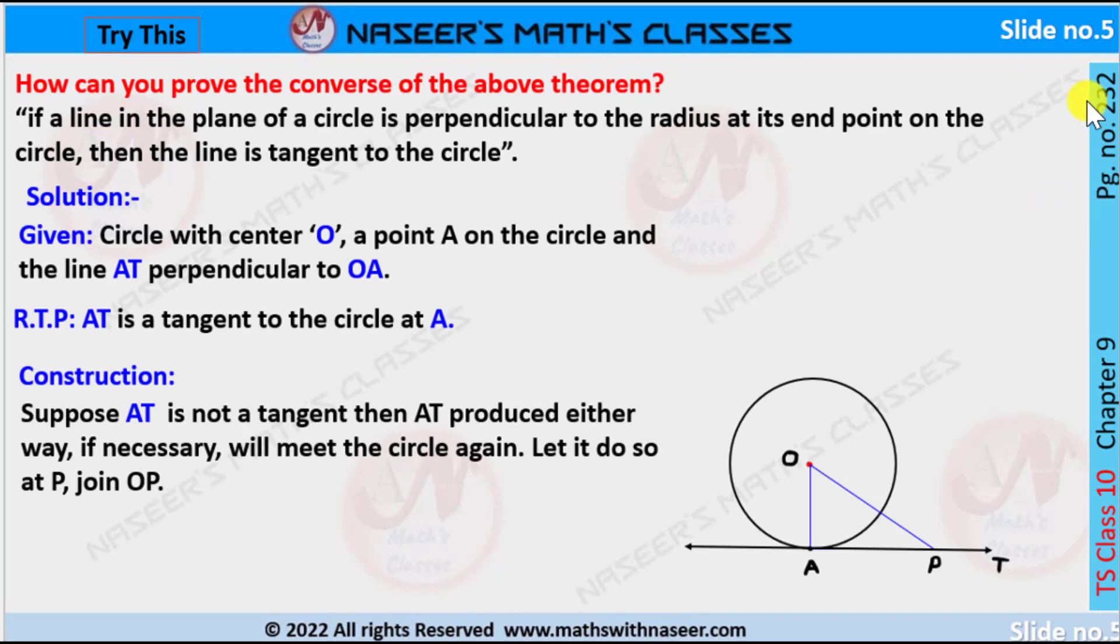This is page number 232. How can you prove the converse of the above theorem? The converse of the above theorem is: if a line in the plane of a circle is perpendicular to the radius at its endpoint on the circle, then the line is tangent to the circle.